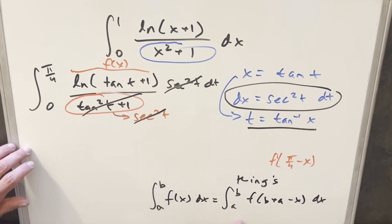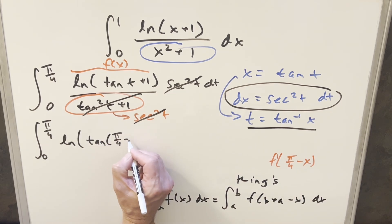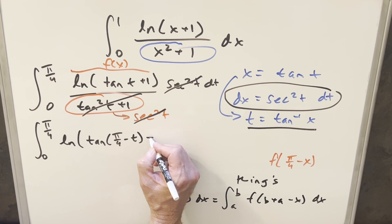The bounds are going to stay the same. So we're going from zero to pi over four, then inputting all this in tangent, plugging in for t with this, we're going to say this becomes tangent pi over four minus t plus one.